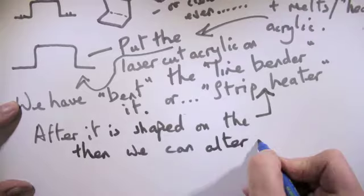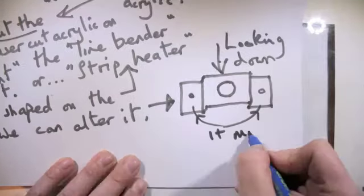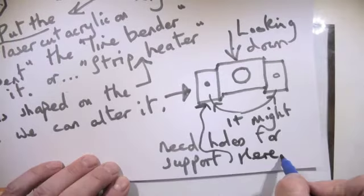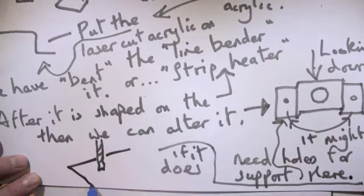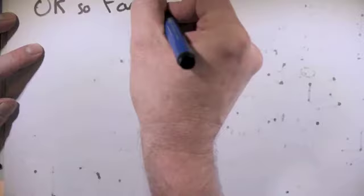And then after it's shaped on the line bender, the strip heater, we can alter it. Looking down on it here, we see from the top we've got the big hole for light fitting. If we need some more holes, we can use a drill to drill them in so we're cutting and shaping it after the event.